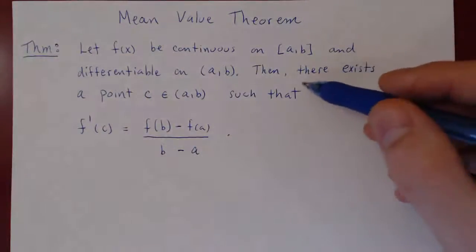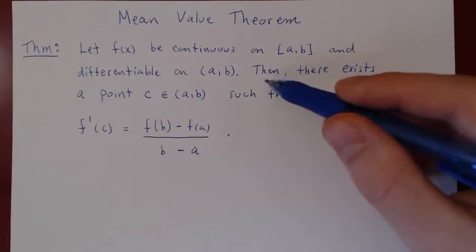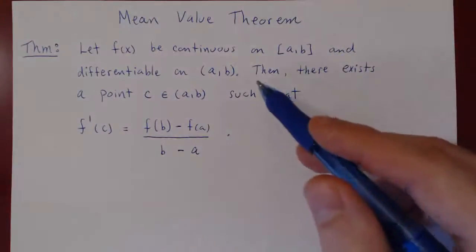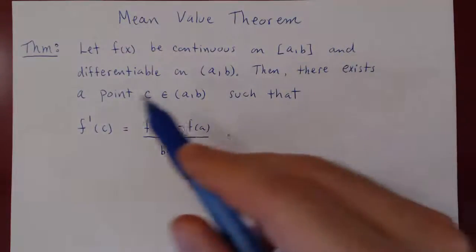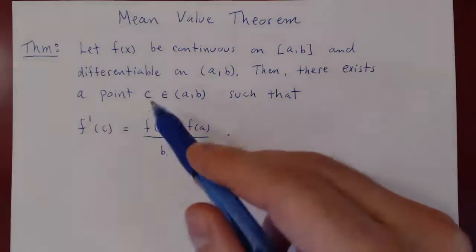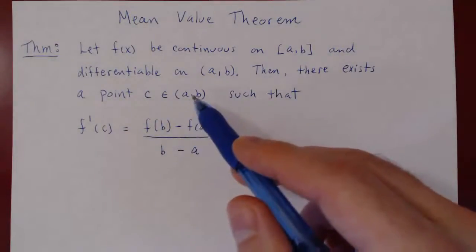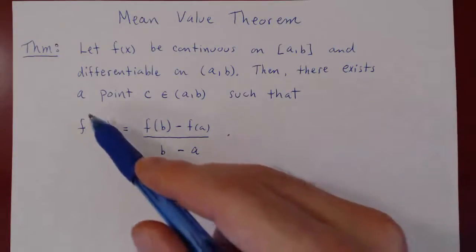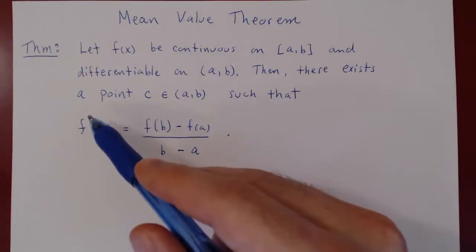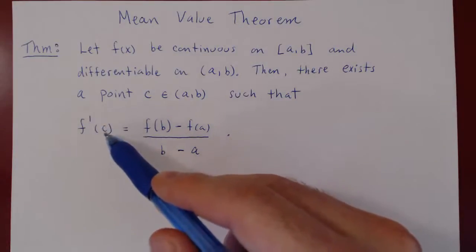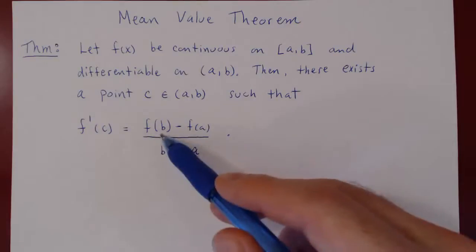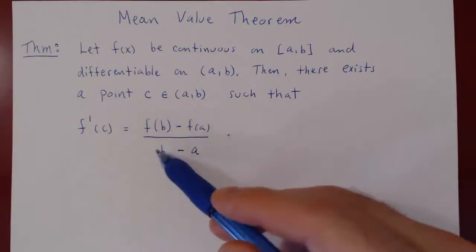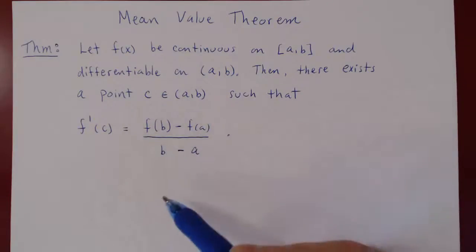Here's the conclusion — and that is the Mean Value Theorem. Then there exists at least one point c in the open interval (a, b) such that the derivative of the function at c equals f(b) minus f(a) over b minus a.